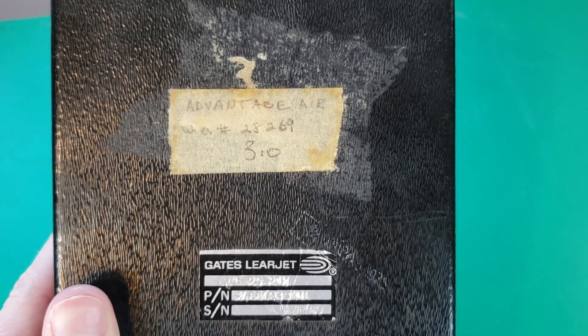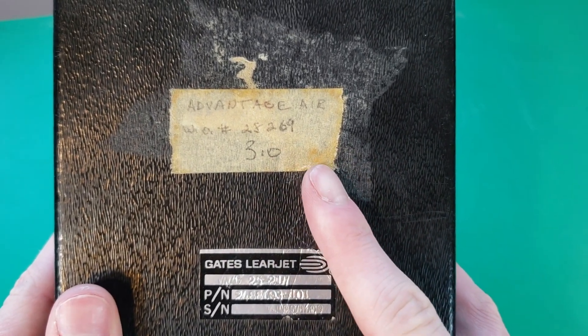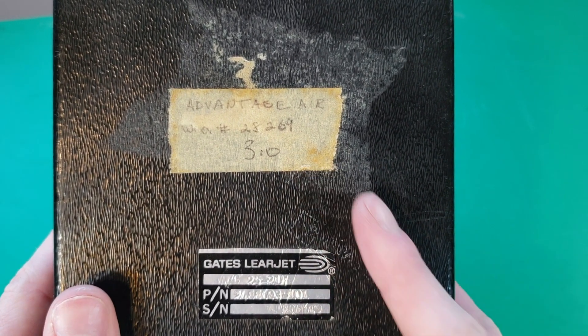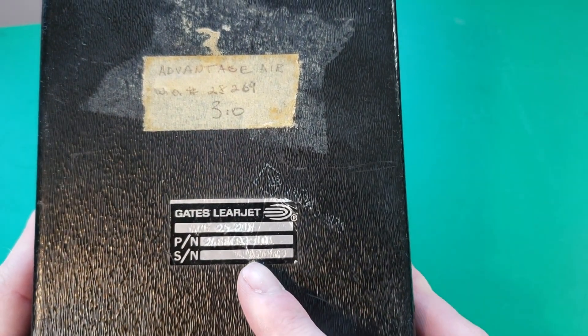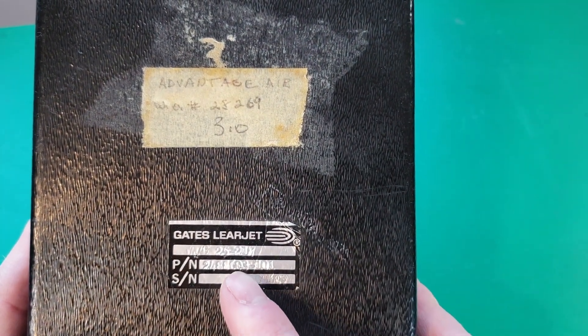So here's what we have on the front. We have a piece of tape here that says Advantage Air on it, and our label here from Gatesley Jet. We have our serial number and part number.